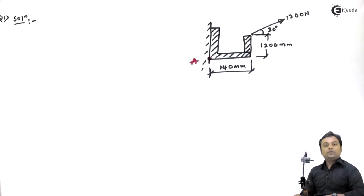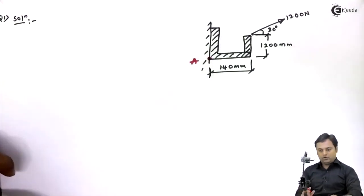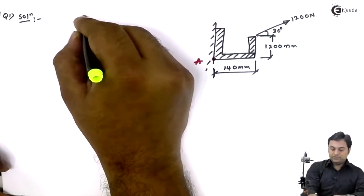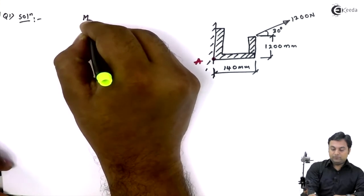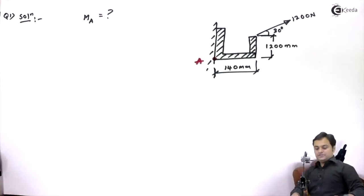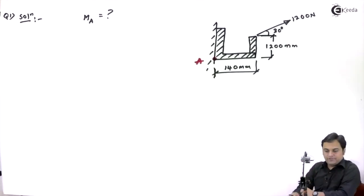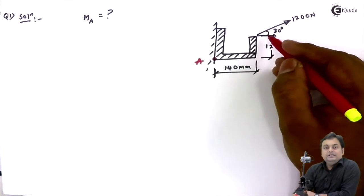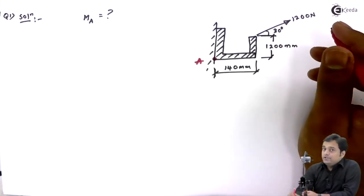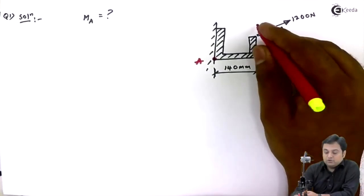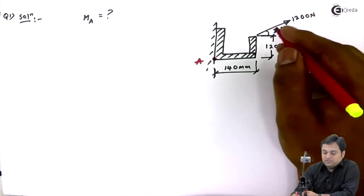At point A we need to calculate the moment of this 1200 Newton force. Since the force is inclined, we cannot solve the problem until we resolve it into its components. You cannot find the moment of an inclined force directly — you must first resolve it.